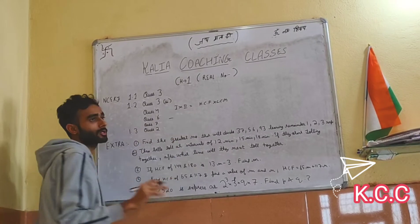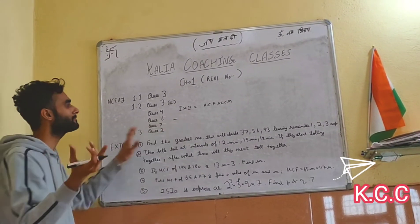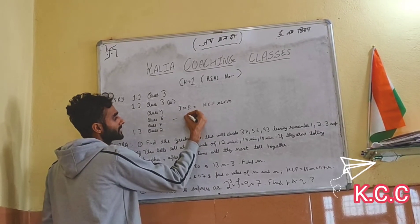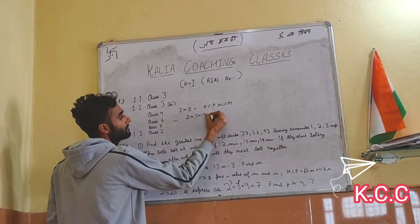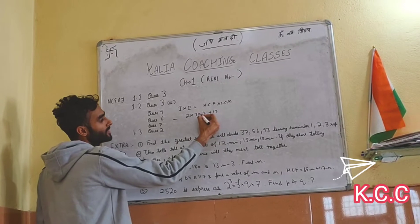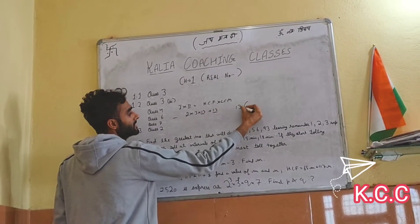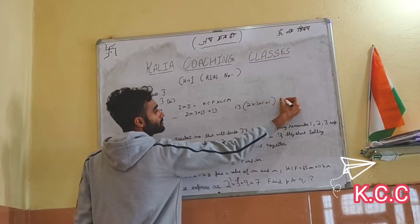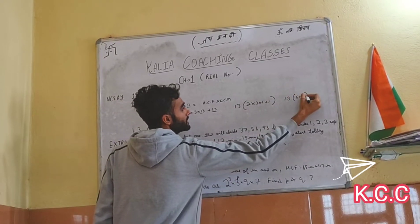Composite numbers — you have to state whether a number is composite or not. You will find that composite numbers are easy to identify. For example: 2 × 3 × 13 + 13. You'll see that 13 is a common factor — 13 is common. So this becomes 2 × 3 + 1, which gives you the factored form.